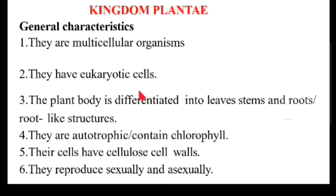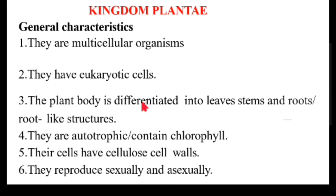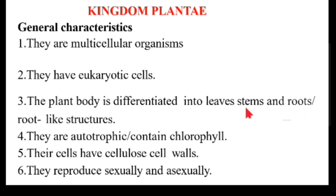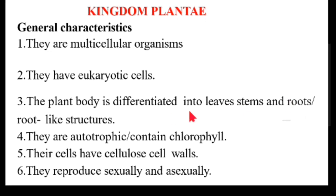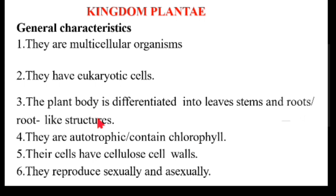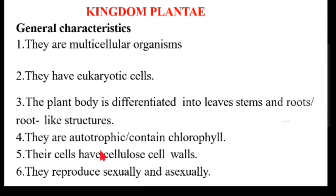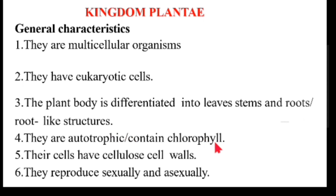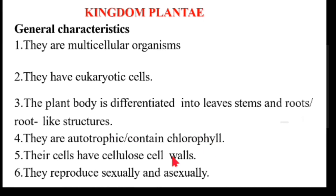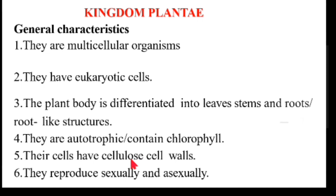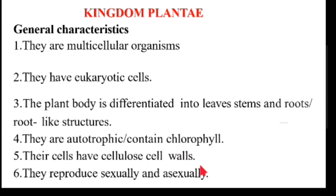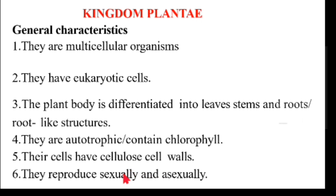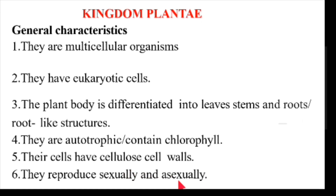Next, Kingdom Plantae — general characteristics: number one, they are multicellular organisms with eukaryotic cells. The plant body is differentiated into leaves, stems, and roots or root hairs. They are autotrophic, meaning they are able to make their own food, because they contain chlorophyll — the photosynthetic pigment. Their cells have a cellulose cell wall which gives them a definite shape. Kingdom Plantae organisms reproduce both sexually and asexually.